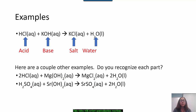Here are a couple other examples. Can you recognize each part of these reactions as with the example labeled above? I see the hydrogen ion in the front of the first compound, which tells me these are the acids. We see hydroxide in each of the second reactants, which identifies them as a base. The first product in each reaction is written as the salt, and the second product is the water.